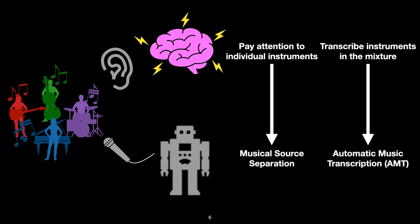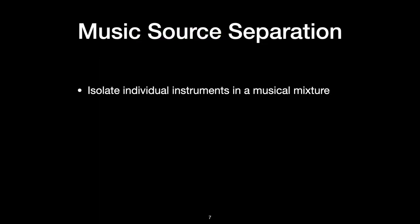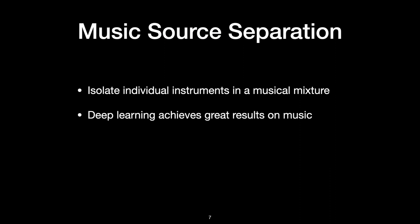Similar to the human abilities we just mentioned, the tasks of source separation and transcription have analogous threads in research within the computer audition community. Historically though, these research areas have remained disparate. Musical source separation is the process of isolating individual instruments within an auditory mixture. Source separation has advanced greatly with recent work, with many neural network architectures achieving impressive results when separating musical mixtures. However, most of these systems only separate sources and do not attempt to produce a human-readable transcription of notes.